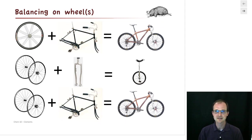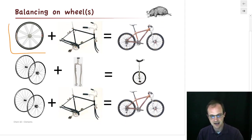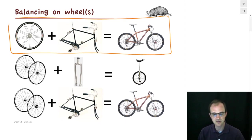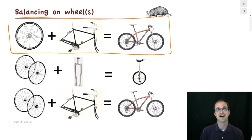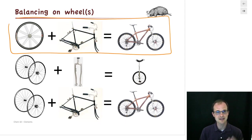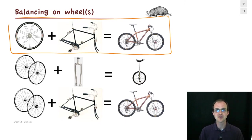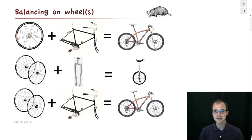How do we make a bicycle? Can we take one wheel, add a frame, and make a bicycle? No — because somewhere that second wheel just appeared on the right-hand side. We only had one wheel on the left and two wheels on the right. Where did that extra wheel come from? You can't do that.